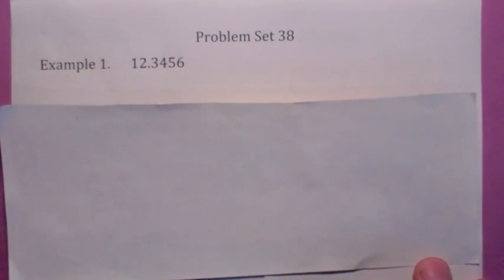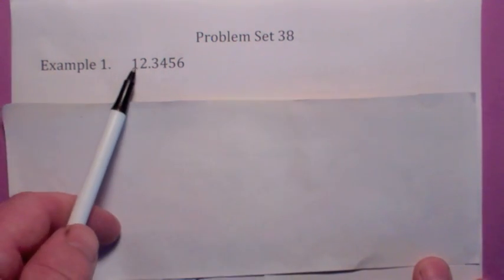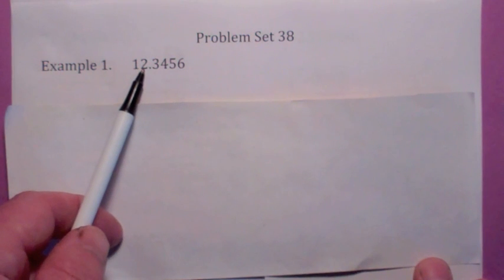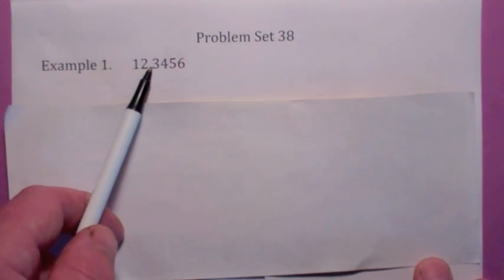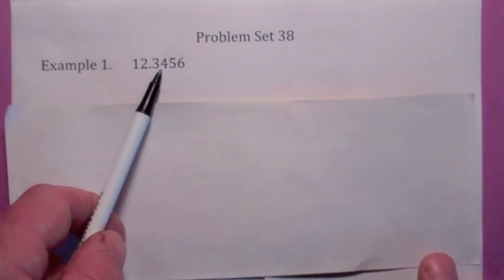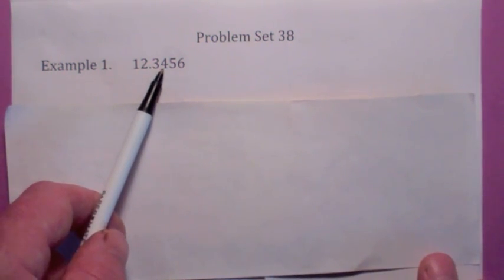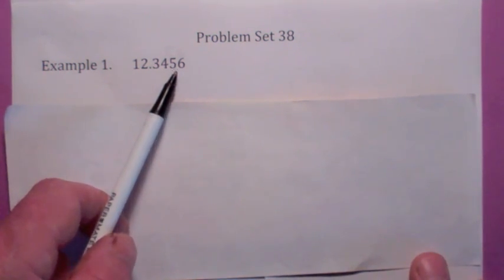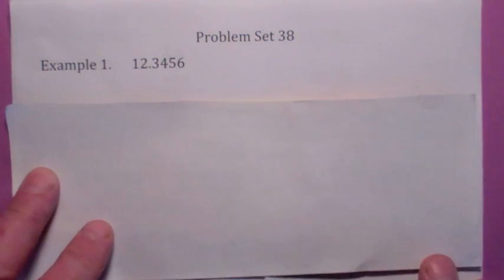Here's an example of a decimal. The 1 would be in the tens place, the 2 would be in the ones place, 3 is in the tenths place, 4 is in the hundredths place, 5 is in the thousandths place, and the 6 would be the ten-thousandths place.